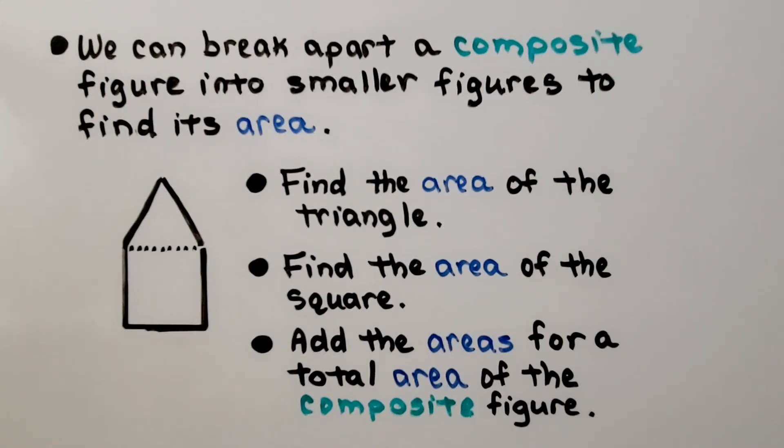We can break apart a composite figure into smaller figures to find its area. We would find the area of the triangle, find the area of the square, and add the areas for a total area of the composite figure.